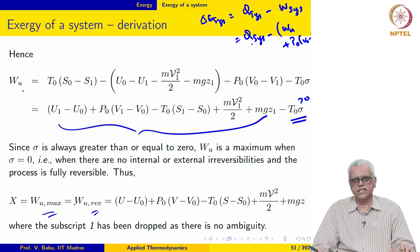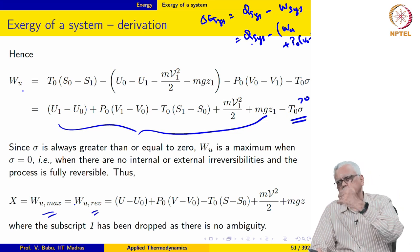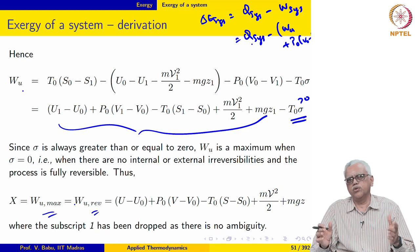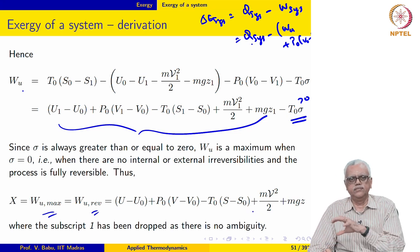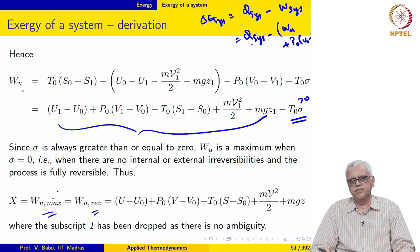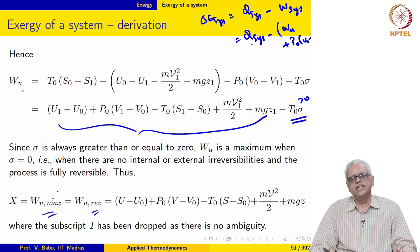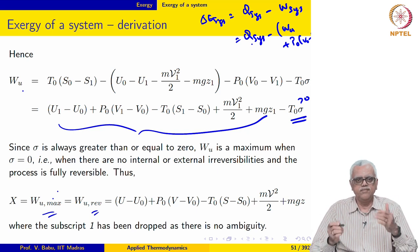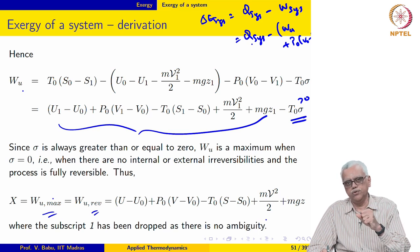Once we have this definition of X, exergy of the system at state 1, the system can go from state 1 to state 0 in any process. There may be some internal or external irreversibilities — it does not matter. It goes from state 1 to state 0 and we get a certain amount of work WU actual. We know WU max for the same system between the same states. So the efficiency for this process can now be defined simply as WU actual divided by WU max. That is where the notion of exergy comes in handy when we want to define efficiency for any process while taking into account entropy generated in the universe.